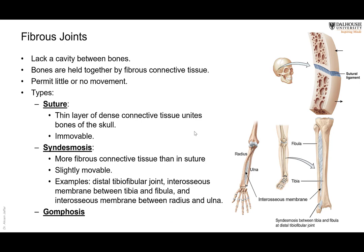Starting with the first type: the fibrous joint. They lack a cavity; the bones are held together by connective tissue, with little or no movement. For example, in the suture between bones of the skull there is no movement. But in other fibrous joints called syndesmosis — between the radius and ulna, or between the tibia and fibula — there is a longer fibrous tissue called the interosseous membrane, which allows a small degree of movement.